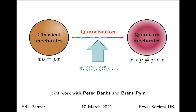In quantum mechanics, one of the key properties is that things are represented by operators and they don't commute, which has consequences like the uncertainty principle. So one way to characterize the transition from classical to quantum is that you start with something commutative and make it non-commutative. In the process of quantization, it turns out that in Kontsevich's approach, transcendental numbers like powers of pi or the Riemann zeta function show up — and that's what I'll talk about in the second half.